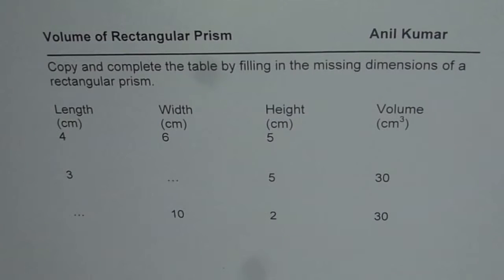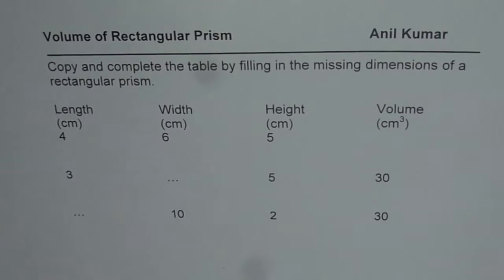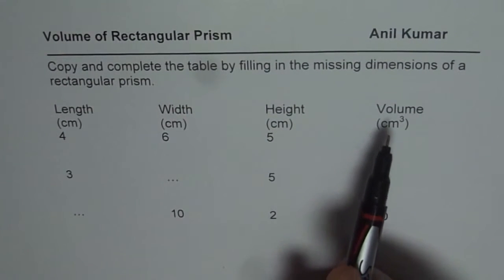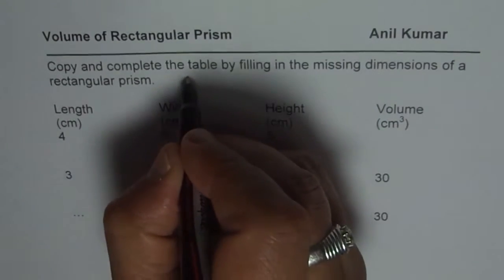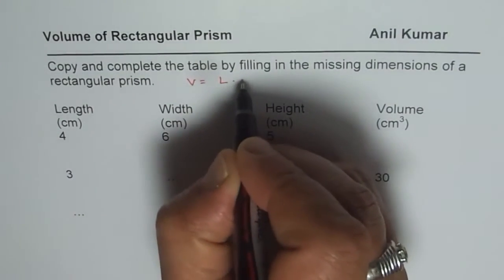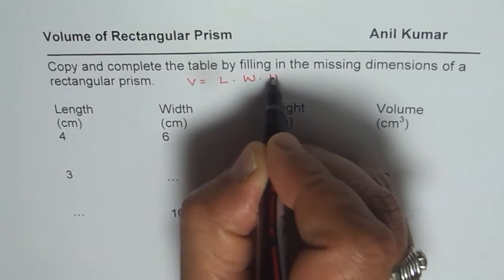I am Anil Kumar and we are exploring volume of rectangular prism. The question here is: copy and complete the table by filling in missing dimensions of a rectangular prism. We are given length, width, height and volume. Remember how they are connected? Volume equals length times width times height.